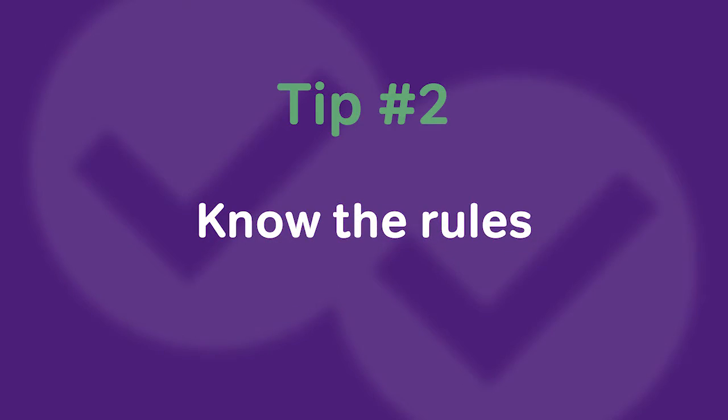Tip number two is to know the rules regarding calculators on the ACT, and there are quite a few of them. An important rule is that calculators are only allowed on the math section — they are not allowed on the science section. They're also not allowed on reading and writing, but that's not quite as important. So any math that you're doing on the ACT science section, you need to make sure that you can do on paper or in your head without the use of a calculator. So don't practice ACT science using a calculator at home.